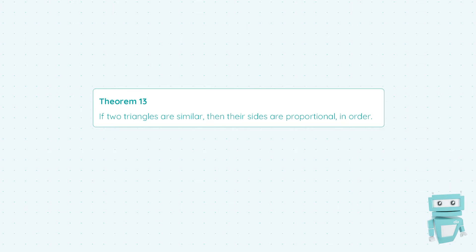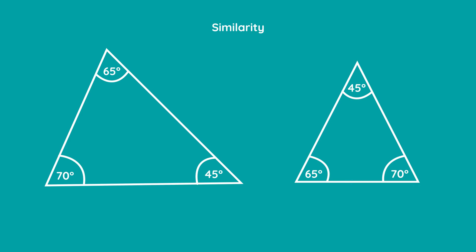So first of all we're just going to define what's meant by similarity. So two triangles are similar if they've got the same angles. And just note here that this doesn't mean that they have the same side lengths necessarily, they just have to have the same angles.